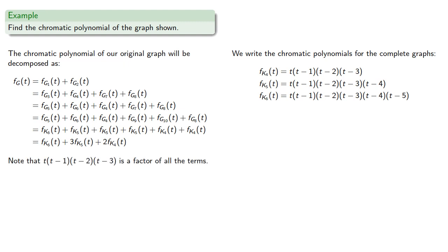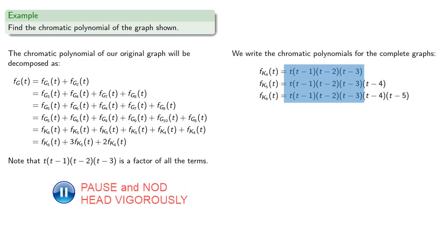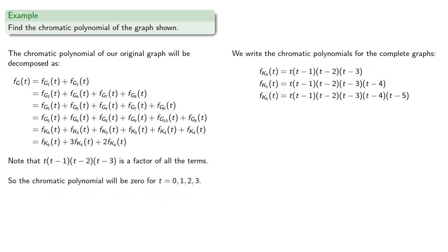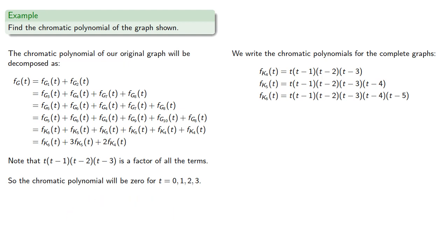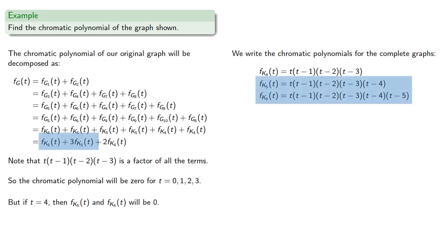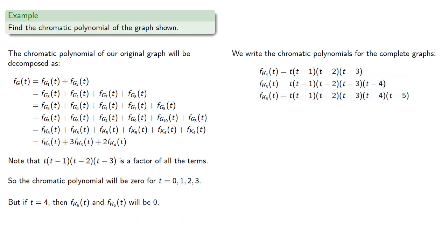Note that the product t(t−1)(t−2)(t−3) is a factor of all three terms. So the chromatic polynomial will be 0 if t is 0, 1, 2, or 3. But if t equals 4, the chromatic polynomials for K5 and K6 will be 0, while the chromatic polynomial for K4 will be 24. So our chromatic polynomial evaluated at 4 is 48, and that also means the chromatic number is 4.